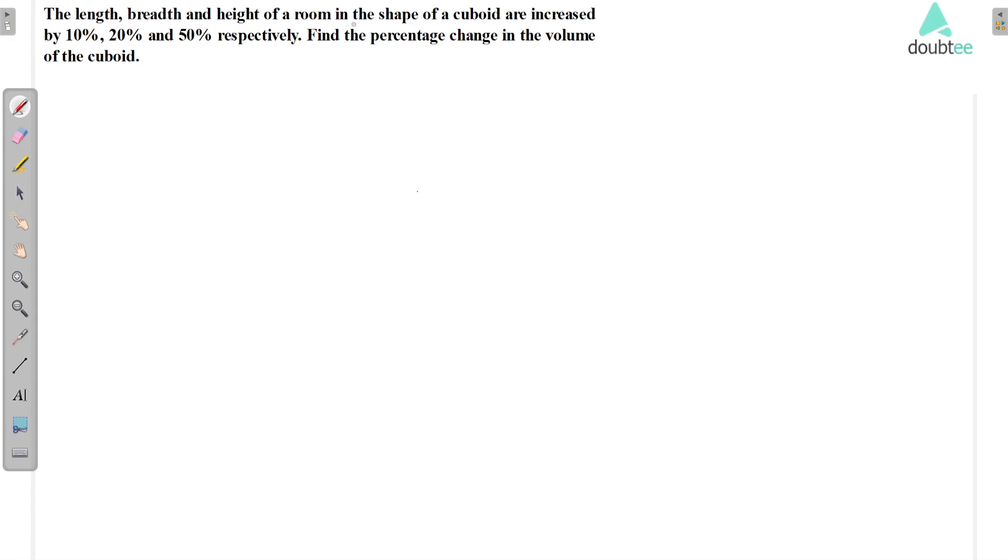The length, breadth, and height of a room in the shape of a cuboid are increased by 10%, 20%, and 50% respectively. Find the percentage change in the volume of the cuboid.